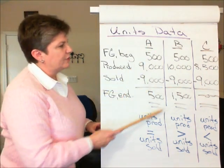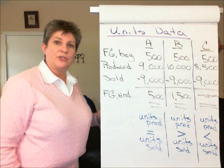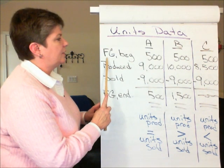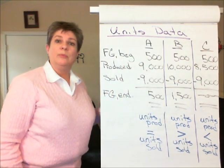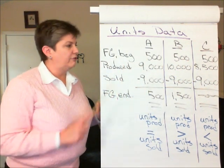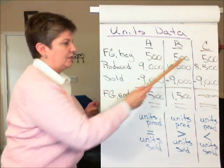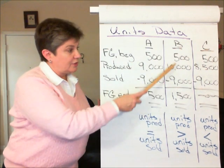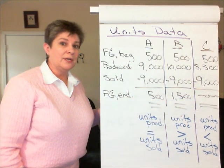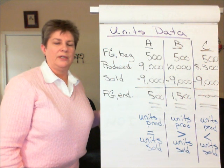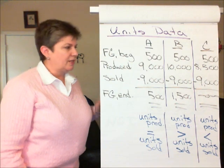Now let's look at the unit data. We've got three different scenarios here in terms of units produced and sold. In all three scenarios, we start out with the same number of units in finished goods beginning inventory: 500 units. What's going to differ across these three scenarios is the number of units produced in any given period relative to the number of units sold.